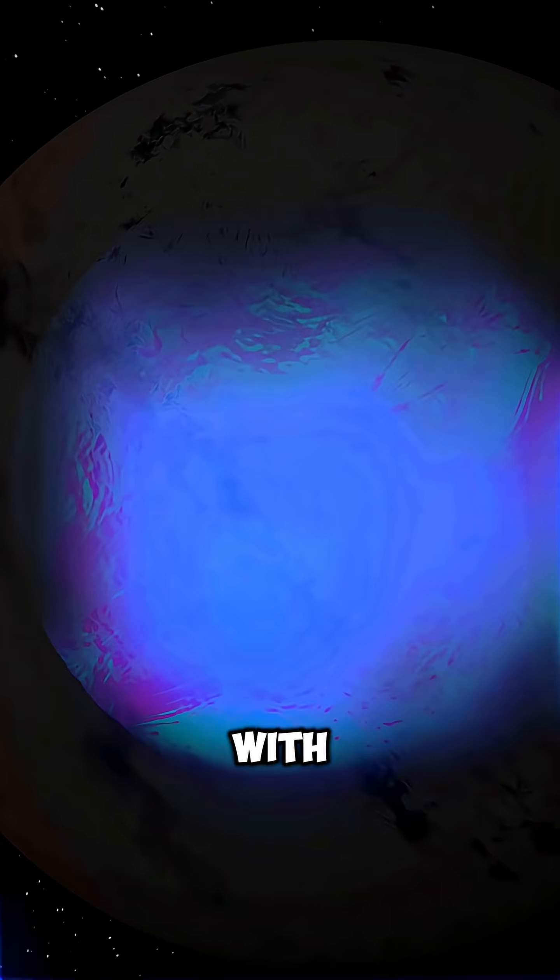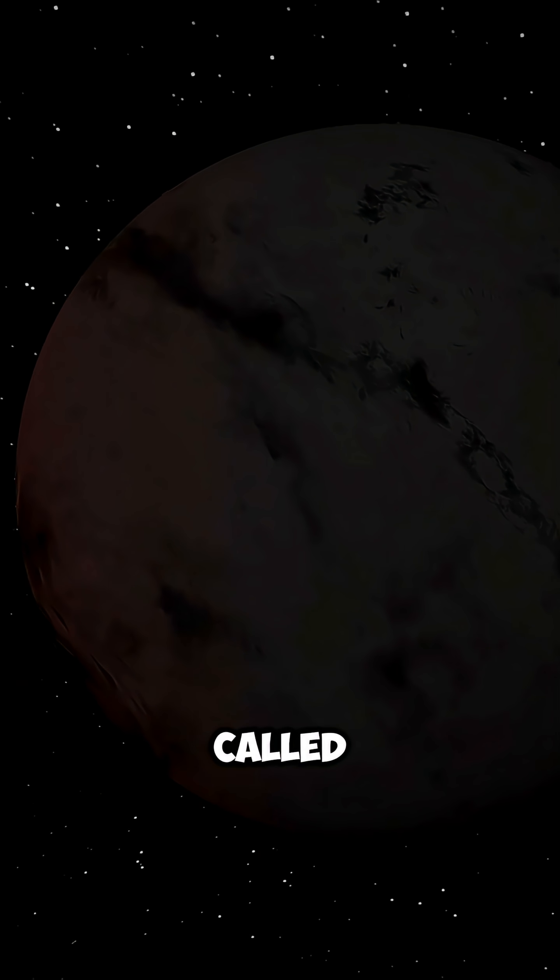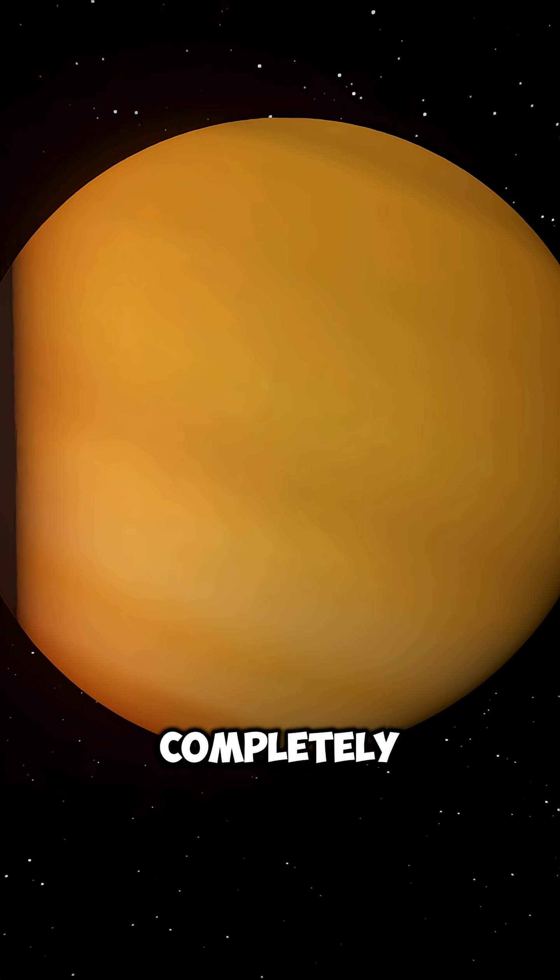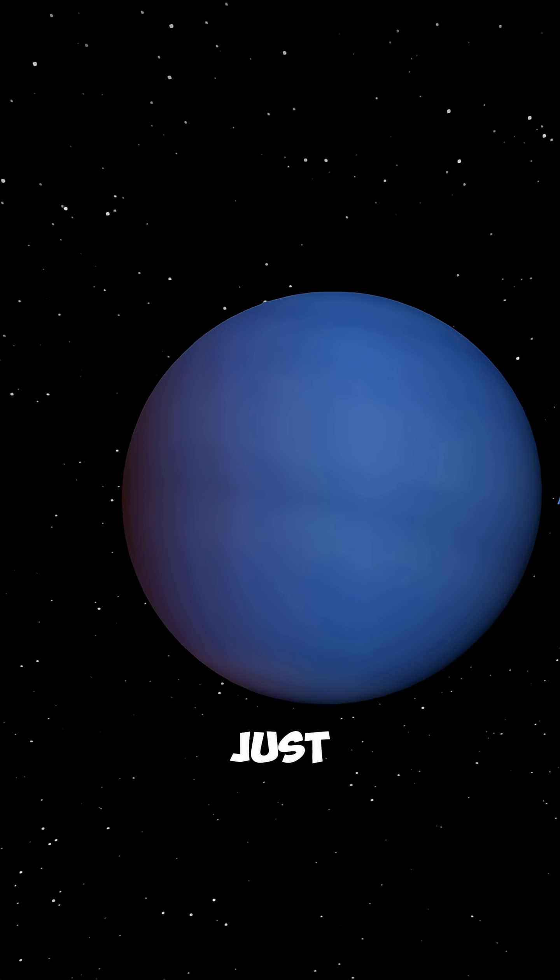But what if I told you there are planets with no star at all? That's right, so-called rogue planets wander through space completely alone, no orbit, no sun, just drifting forever.